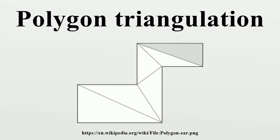Related problems include minimum weight triangulation, where the goal is to minimize the total edge length rather than the number of triangles. Both triangulation problems are special cases of triangulation and polygon partition. A point-set triangulation is a polygon triangulation of the convex hull of a set of points. A Delaunay triangulation is another way to create a triangulation based on a set of points. Related problems also include polygon triangle covering, where triangles may overlap, and tiling by polygons, where the goal is to cover the entire plane with polygons of pre-specified shapes.